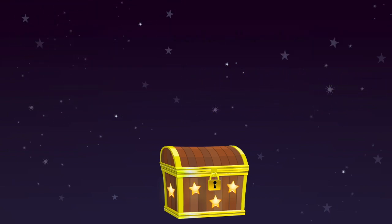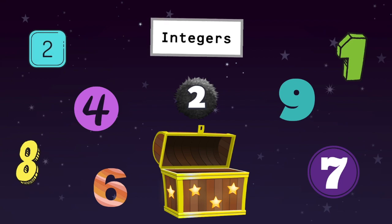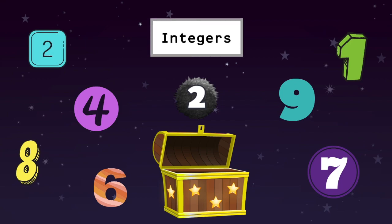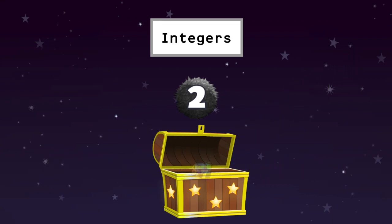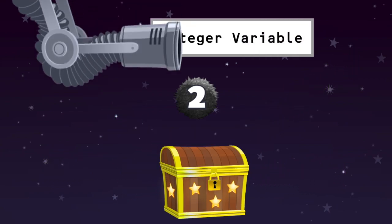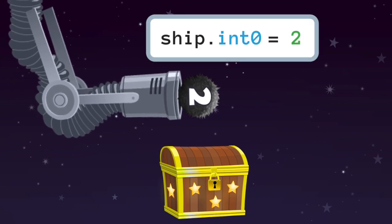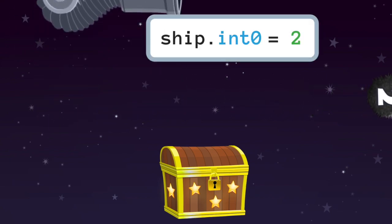Some variables can store number values, called integers. In a game, these would be helpful for determining volume, difficulty, or speed. These number values are stored in an integer variable. In Codable, we use numbered fuzzballs to represent integers.